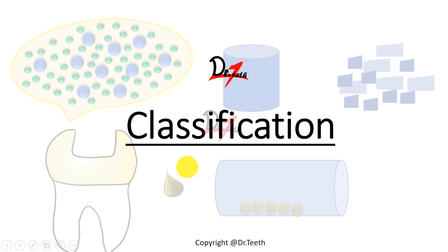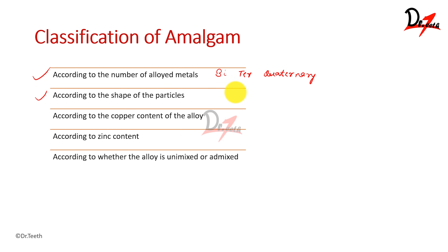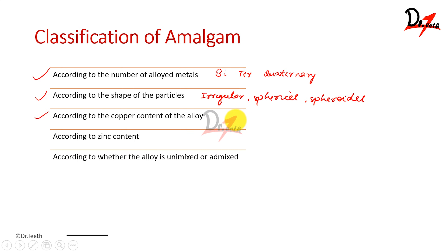Now let's talk about the classification of dental amalgam. It can be classified by various means. According to the number of alloyed metals, we can have binary (two metals), ternary (three metals), or quaternary (four constituents). According to the shape of the particles, we have irregular, spherical, or spheroidal. According to copper content, we have high copper alloy and low copper alloy — low copper generally has 2–6 percent copper.